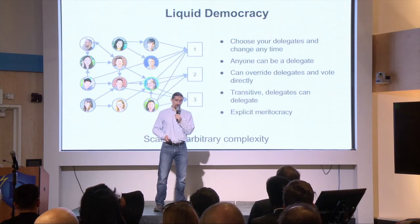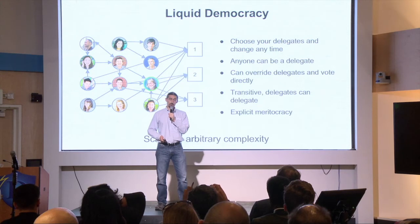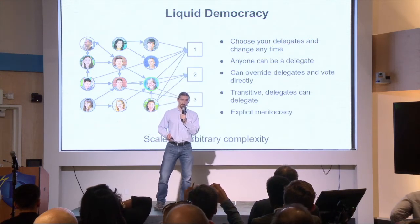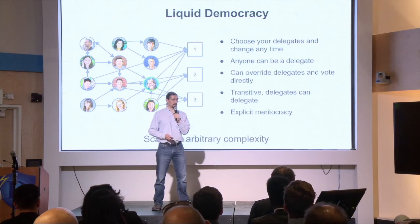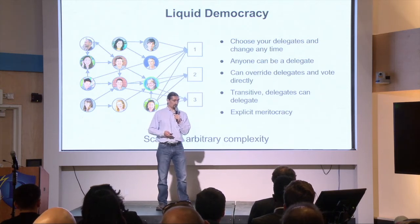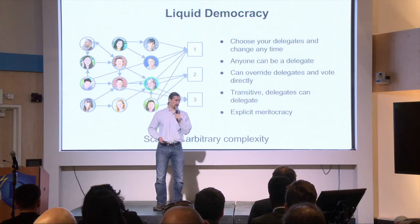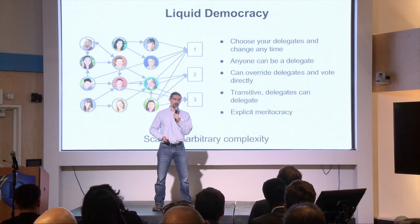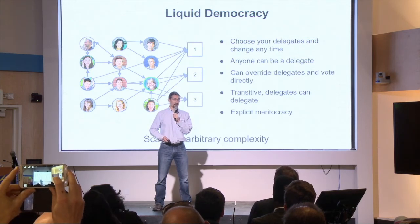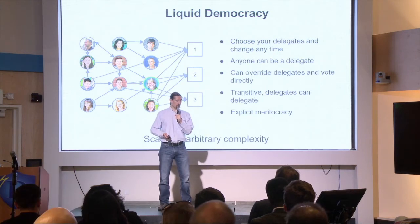Now, a liquid democracy system kind of combines the best of both worlds. The idea here is that everybody can be a politician, and you use an electronic tool for people to manage delegations from peer to peer. And these delegations can be transitive. So, for example, the woman in the green circle there has a number of people delegating to her, so she acts much like a representative in that she has a lot of power and a lot of people trust her. But very quickly, if she abuses her power, people will de-delegate away from her.